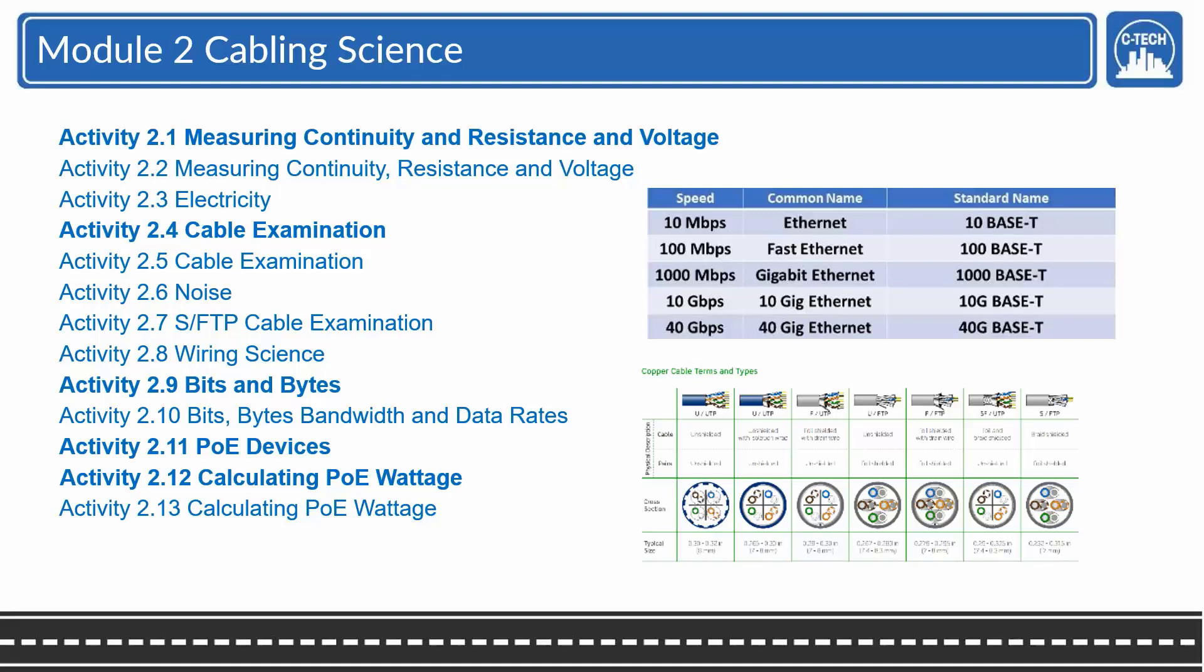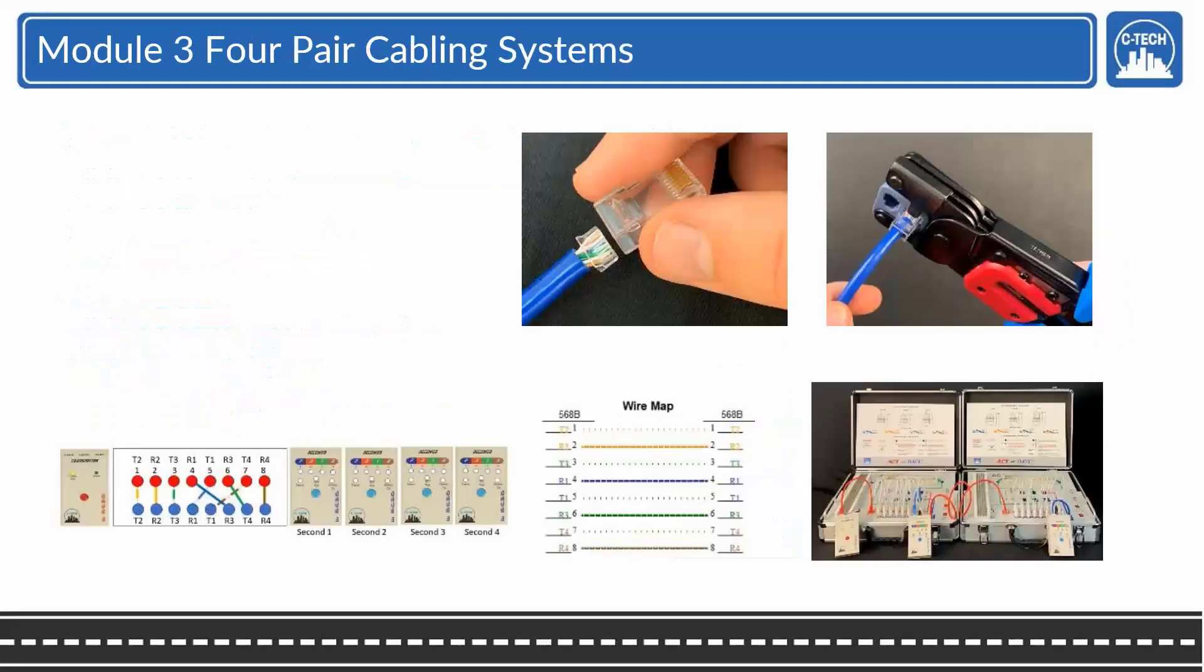Note that the cables changed. Now the designators are now U/UTP or U/FTP or whatever, designate different types of cables. Module 3 would be the old 3.3 Module 4, and that will construct cables, work with the jacks and the testers in the different configurations.